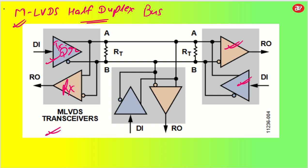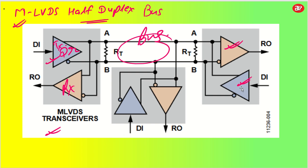In half duplex, there is only one bus. Let's say the driver is working — only the driver signal will be working and driving. At that time, only the receiver will be receiving the signals. If another driver has to send the signal, then the other drivers will keep quiet and that bus will be utilized for that particular driver. This is how half duplex works.